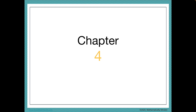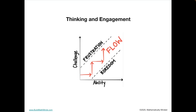Let's move on to chapter four, which is all about how to use hints and extensions to maintain flow. When we think about the cognitive process, it's invisible to the observer — the cognitive process really manifests in physical actions. If your students are thinking they're engaged, and if they're engaged they're thinking. One thing to take out of this chapter is how to notice whenever a student is having an optimal experience.